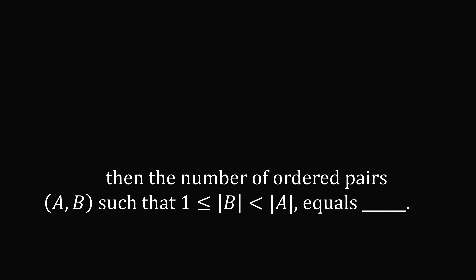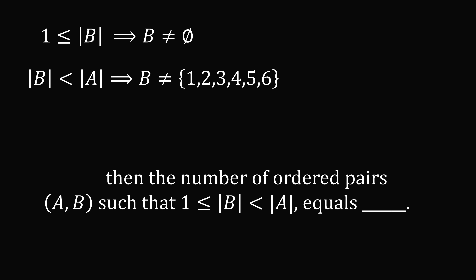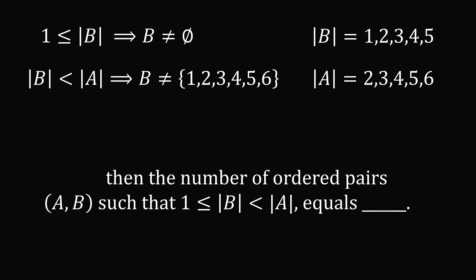Now let's go to the next sentence: the number of ordered pairs (A, B) such that 1 is less than or equal to the cardinality of B, which is less than the cardinality of A. The condition 1 ≤ |B| means B cannot be the empty set — it must have at least one element. Since |B| < |A|, B also cannot be the entire set S. So B has to have a cardinality of 1, 2, 3, 4, or 5, and A must have a cardinality larger than that: 2, 3, 4, 5, or 6.